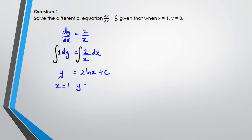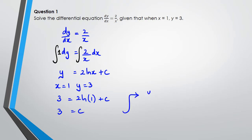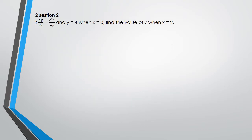When we integrate 2/x we get 2·ln(x) + c. Now it tells us that when x equals 1, y equals 3. So we substitute: 3 = 2·ln(1) + c. Since ln(1) = 0, we get c = 3. So the final equation is y = 2·ln(x) + 3. That's the first question.